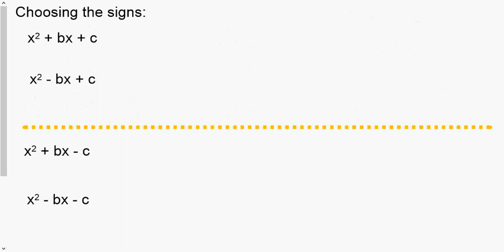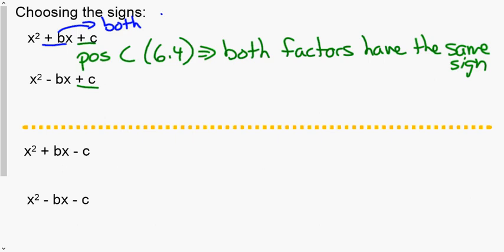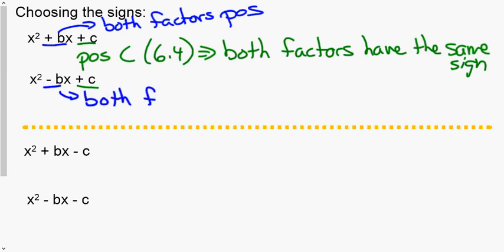Let's talk a little bit about number theory. When c is positive, as we saw in section 6.4, both factors have the same sign, and that sign matches the sign of b. So if b was positive, both factors were positive, and if b was negative, both factors were negative.